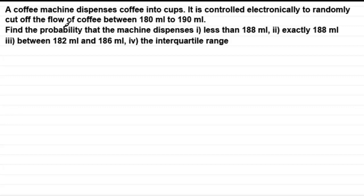We've got to find the probability that the machine dispenses: in part one, less than 188 millilitres; in part two, exactly 188 millilitres; in part three, between 182 millilitres and 186 millilitres; and in part four, work out the interquartile range. If you want to pause the video to practice, just pause, come back when ready and compare your results with the worked solution.